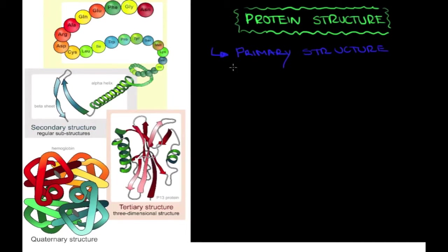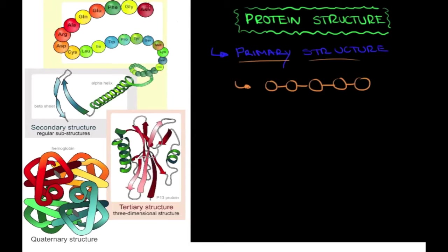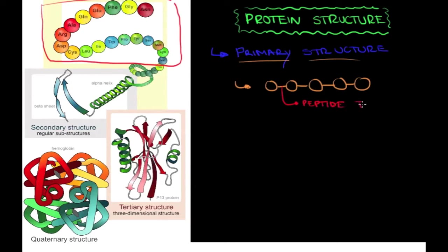The first level I want to talk about in protein structure is the primary structure of a protein. The primary structure is very simple — it's the sequence of amino acids. That linear molecule you see in the picture — the line of amino acids bound to one another through peptide bonds — is the primary structure. Whenever we talk about primary structure, we're saying it's a line of amino acids bound together through peptide bonds.